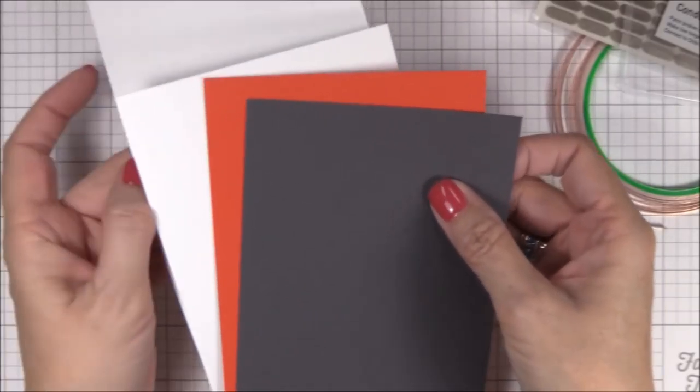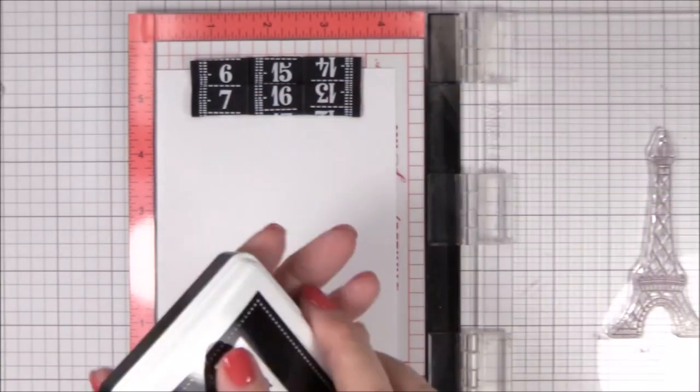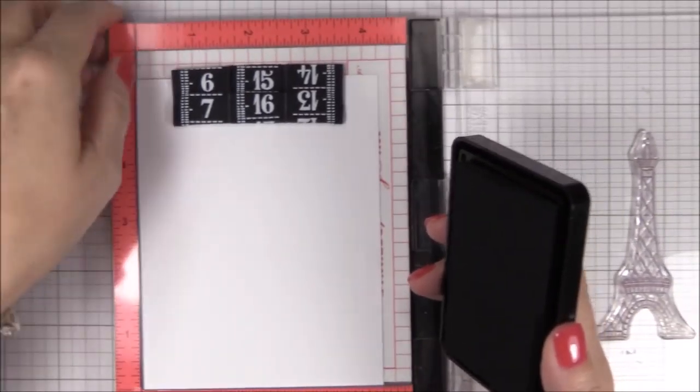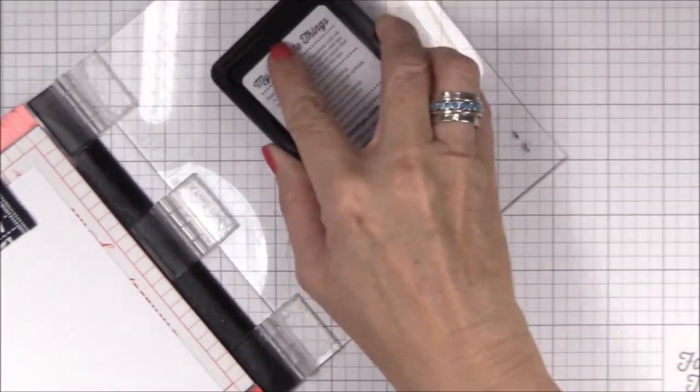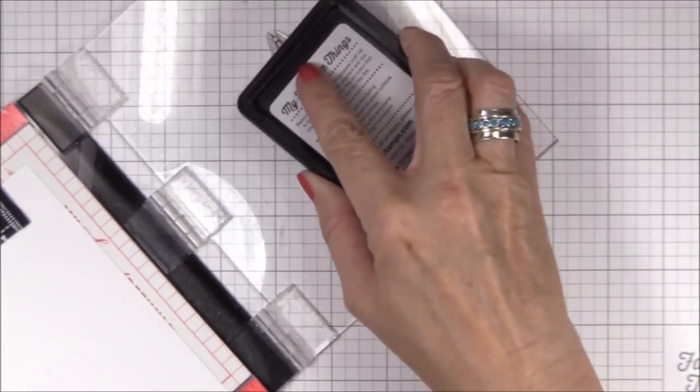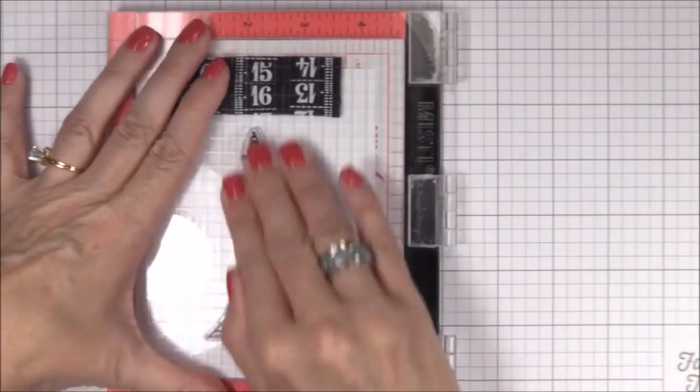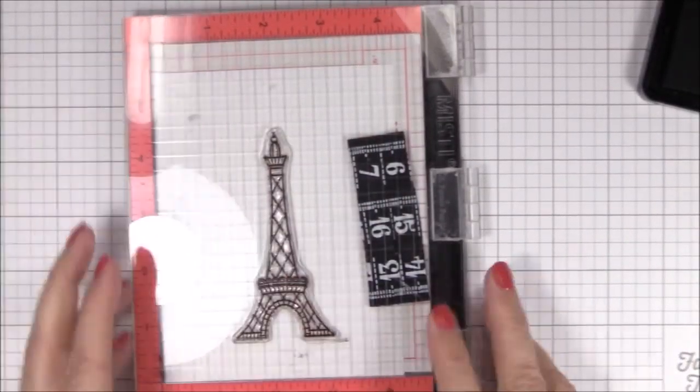I'm also using some smooth white cardstock, poppy cardstock, and some gravel gray cardstock. I'm starting off with a 4 1/4 by 5 1/2 inch piece of smooth white cardstock, and I'm inking up the Eiffel Tower image from the In Paris stamp set using black licorice hybrid ink.